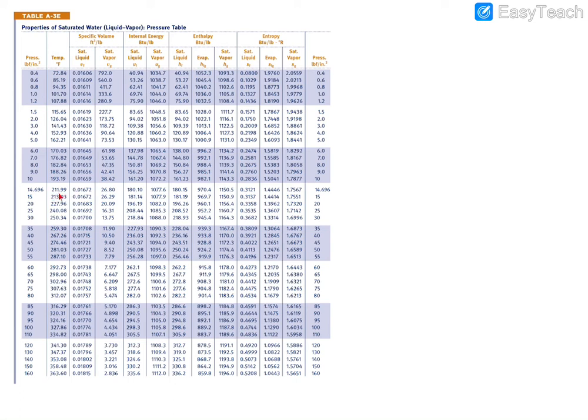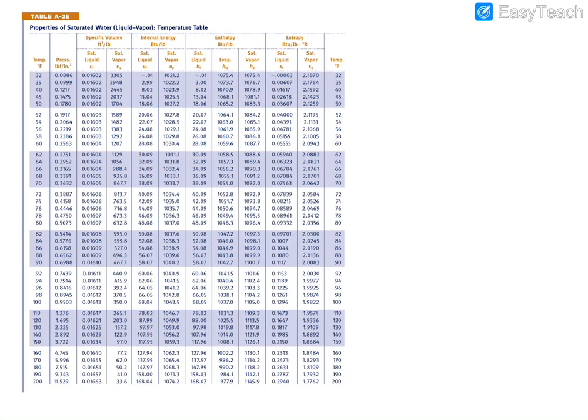60 degrees is less than the saturated temperature, so we're to the left of the vapor dome, which is a compressed liquid. However, you won't find a pressure this low on the compressed liquid table. We can approximate using the saturated liquid specific enthalpy, but at 60 degrees Fahrenheit rather than 14.7 psi, because properties fluctuate more with temperature than pressure. At 60 degrees on table A2E, the saturated liquid specific enthalpy is 28.08 BTU per pound.